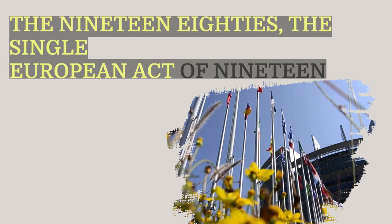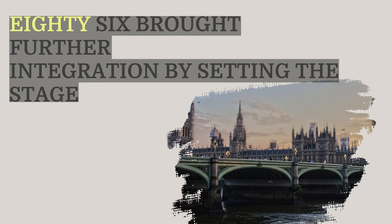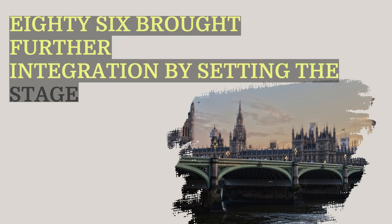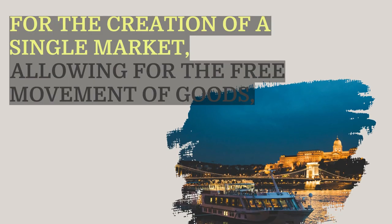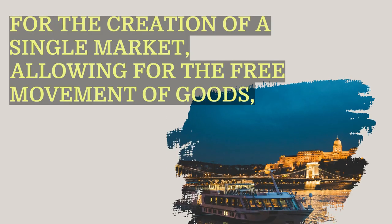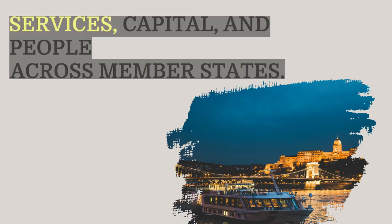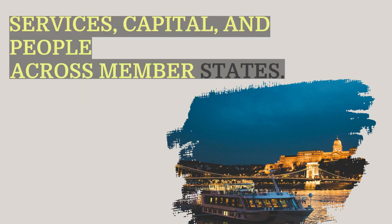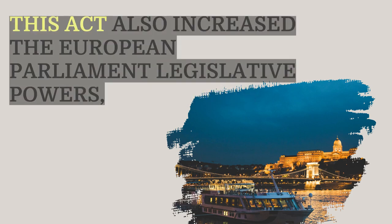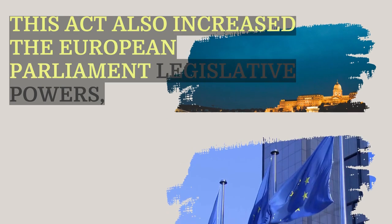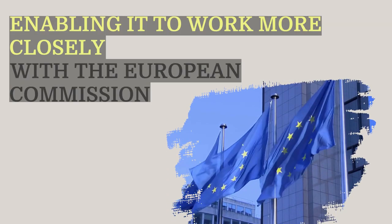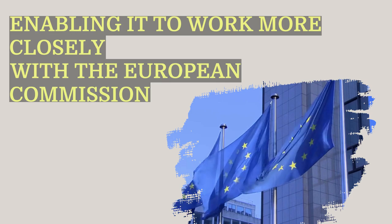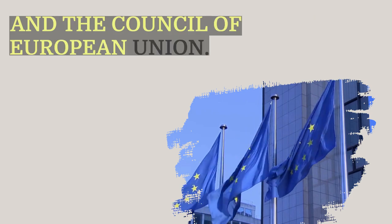In the 1980s, the Single European Act of 1986 brought further integration by setting the stage for the creation of a single market, allowing for the free movement of goods, services, capital, and people across member states. This act also increased the European Parliament's legislative powers, enabling it to work more closely with the European Commission and the Council of the European Union.